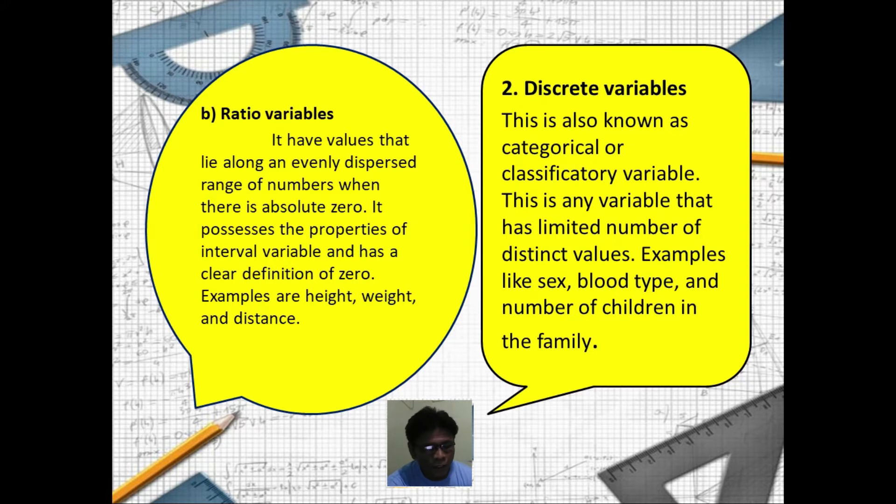Examples like sex, blood type, and number of children. Why sex? Sex because we have only two types of sex: the male and female. Why blood type? Blood type because a blood type is countable.